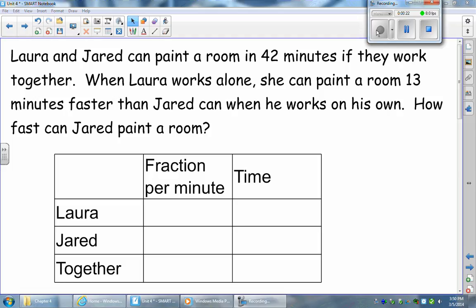Set up a table similar to the one I've set up here. You're going to have one column for the fraction of the room that they can paint per minute and one column for time. And you're going to have three rows: one for Jared, one for Laura, and one for them working together.